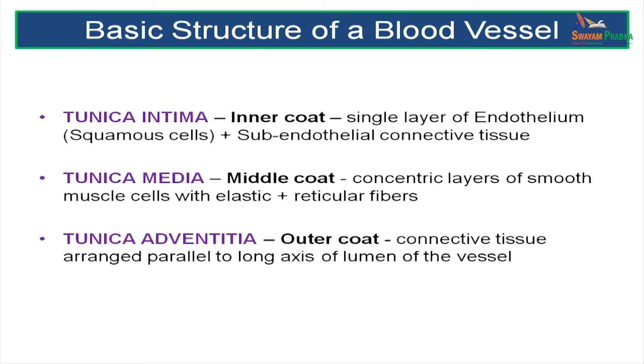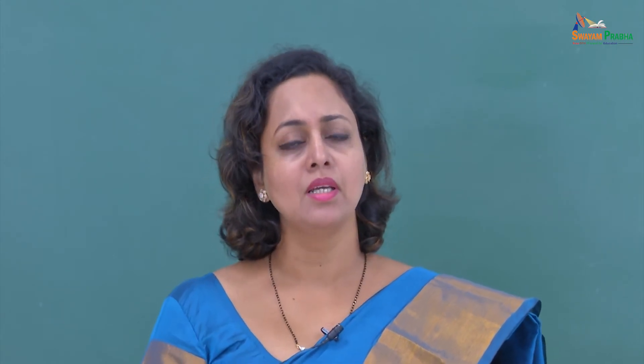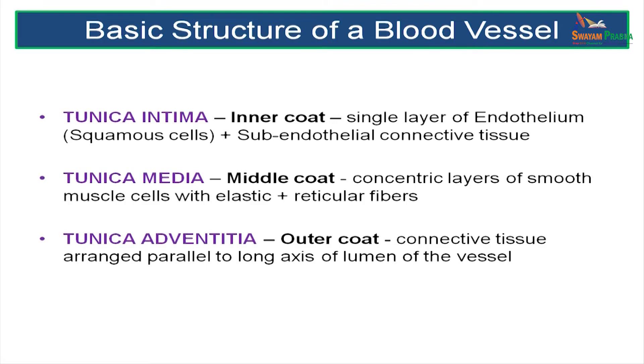The walls of a blood vessel are made up of three layers — always remember: tunica intima, tunica media and tunica adventitia. The word tunica means a covering. The tunica intima is the innermost covering made up of a single layer of endothelial squamous cells, a basal lamina and internal elastic lamina. The tunica media is muscular and elastic, and the tunica adventitia is made up of collagen fibres and is the outermost covering.